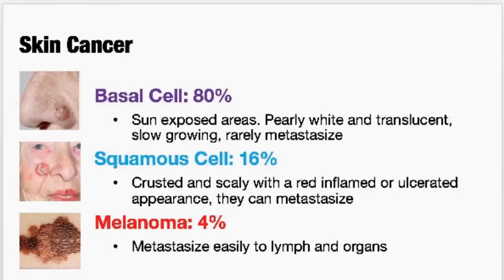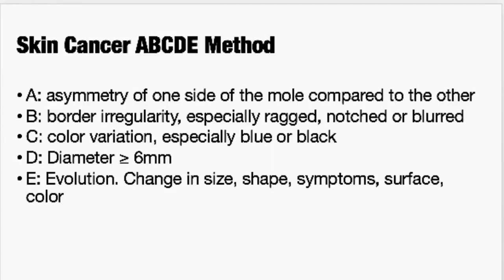As a clinician, you can use the ABCDE method. A stands for asymmetry — compare one side of the mole to the other; if it's asymmetric, that's more likely to be melanoma. B is for border — it shouldn't be irregular, ragged, notched, or blurred. C — the color should be consistent throughout, without a lot of variation, especially in blues and blacks. D — diameter should be less than six millimeters, about the size of a pencil eraser. E is evolution — change in size, shape, symptoms, surface, or color. If there's any change, ask patients about their skin lesions because they sometimes notice changes before you do.